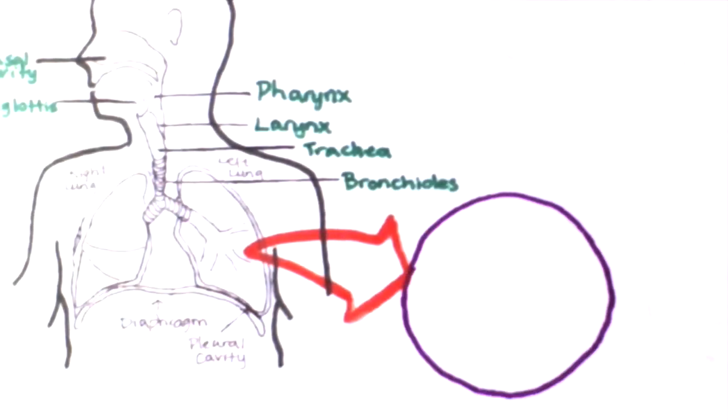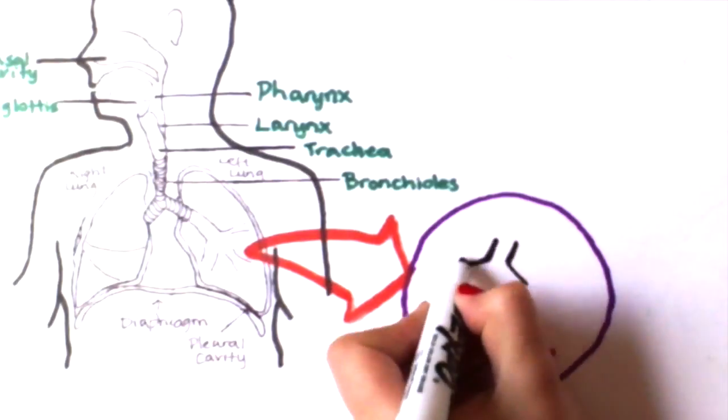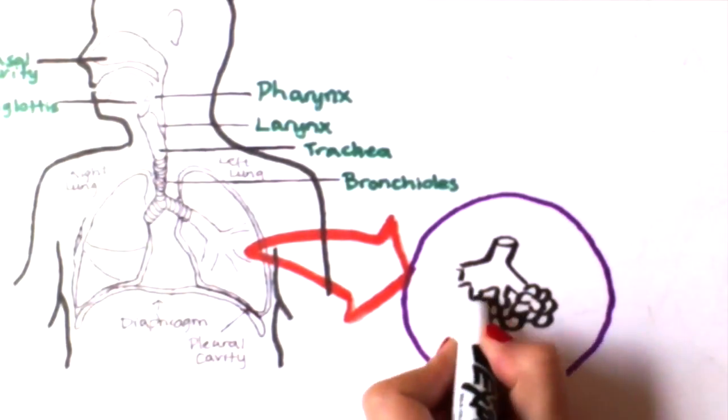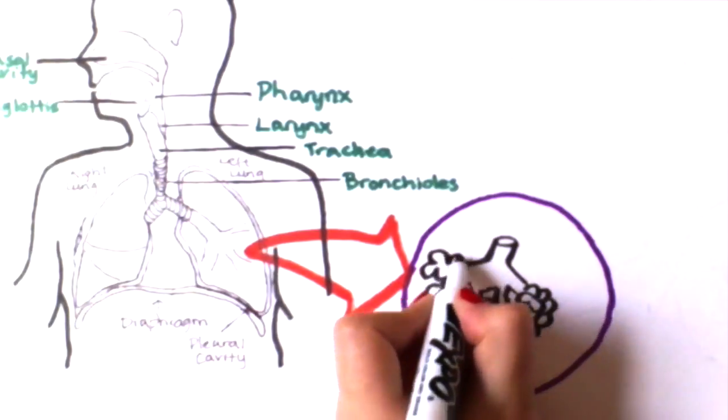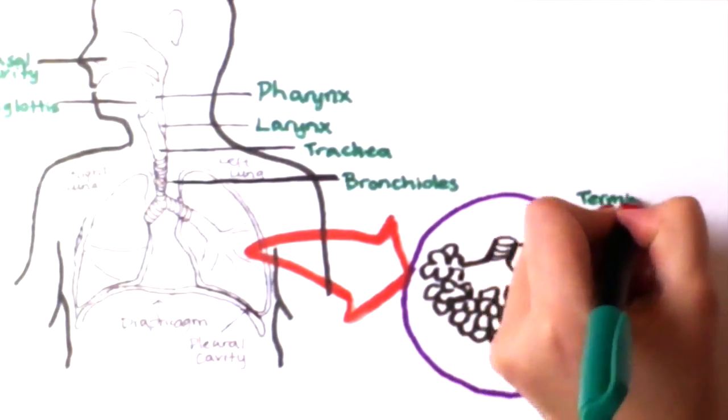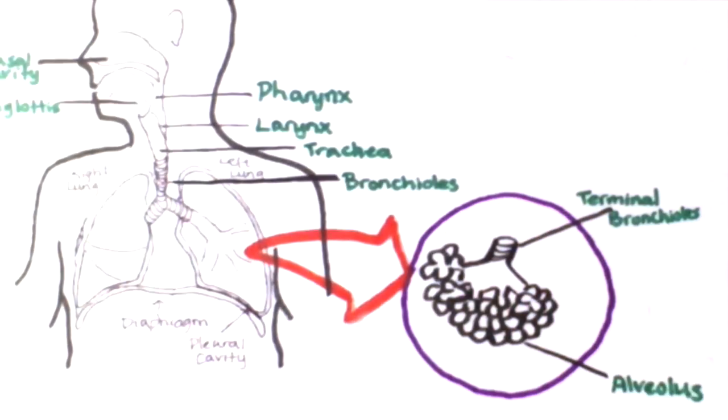Taking a closer look at the functional unit of the lungs, the alveoli, we notice that they look like a bunch of grapes. The reason that they look like this is to increase the surface area. This allows for a vast amount of gas exchange to occur.